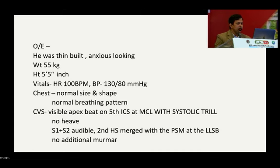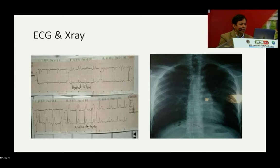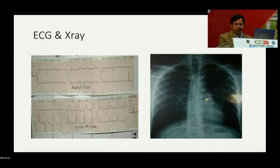On examination: thin built, anxious looking, 5 feet 5 inches, weighing only 55 kg. Heart rate 100 bpm, BP 130/80 mmHg. Chest findings normal. Visible apex beat at fifth intercostal space, mid-clavicular line, with systolic thrill. First and second heart sounds audible; pansystolic murmur at left lower sternal border. ECG: heart rate 110, LV strain, mild left axis deviation. Chest X-ray: levocardia, no significant cardiomegaly, no pulmonary hypertension signs.